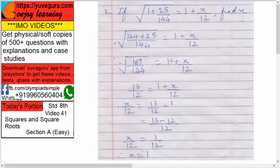Equals to 1 plus x by 12. So what is square root of 169? Now remember, I always tell you: learn squares up to 30, tables up to 30, and cubes up to 15 by heart—they are useful for you throughout life.